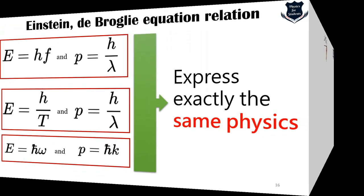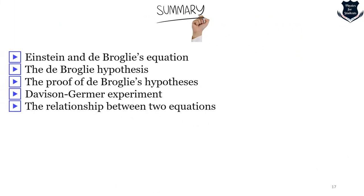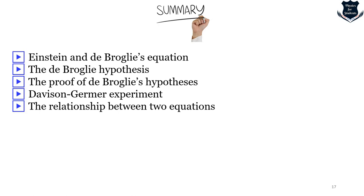Here is a quick summary for what we have learned today. We have looked into Einstein-de Broglie relation, the de Broglie hypothesis, and most importantly how Davison-Germer proved the de Broglie hypothesis and the relation between these two equations.